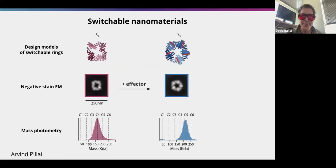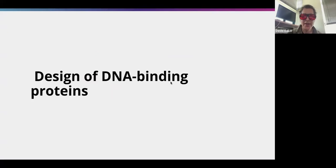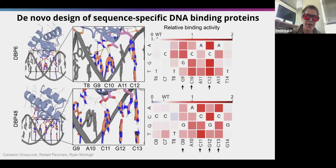These are cryo-EM structures. We can also make nanomaterials that switch between two different states: a design with four different subunits, where adding an effector control molecule causes it to switch to five different subunits, visibly changing from a square shape to a pentagon shape.